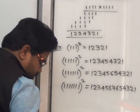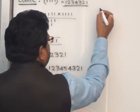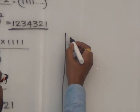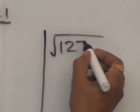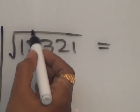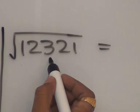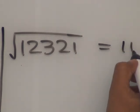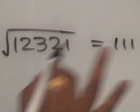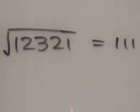So we will take the square root. Save values should be root. Suppose square root of 1, 2, 3, 2, 1. So this square and square root cancel. So the value equals the square root. 3 ones — so 111. So square root of 12321 is equal to 111.